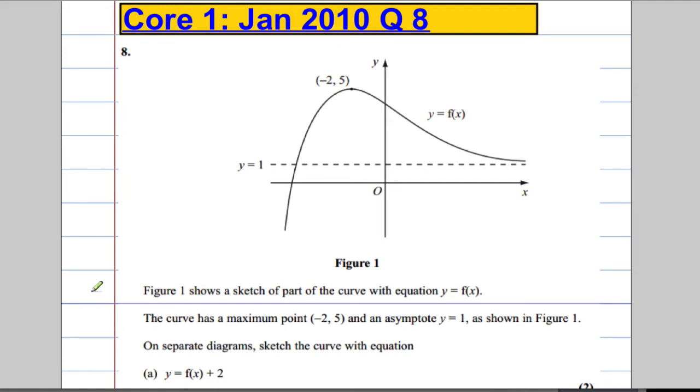Alright, so question 8. We're given Figure 1 which shows a sketch of part of a curve with the equation y equals f of x. It shows that it's got a maximum at negative 2, 5 and an asymptote at y equals 1, shown in the figure.